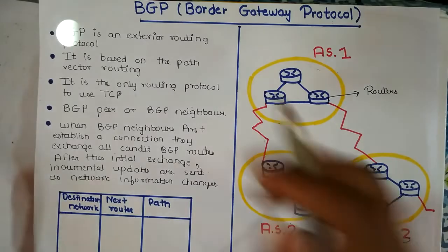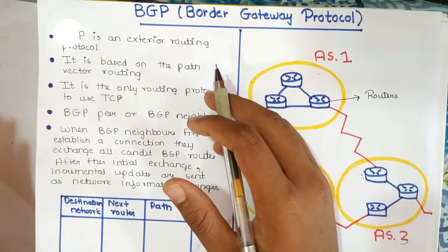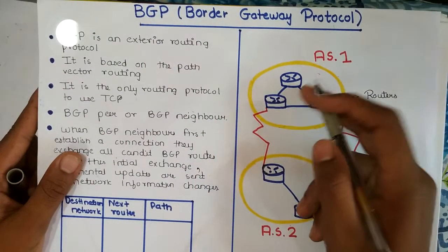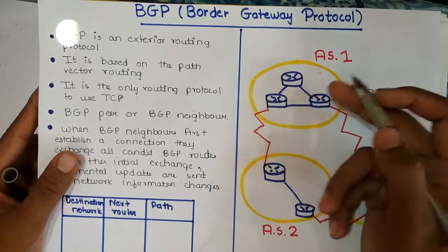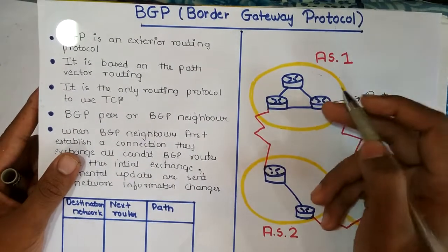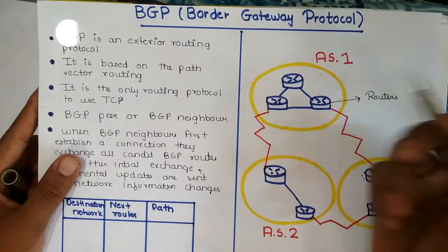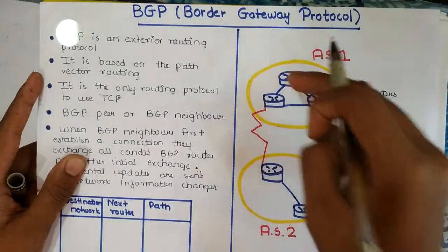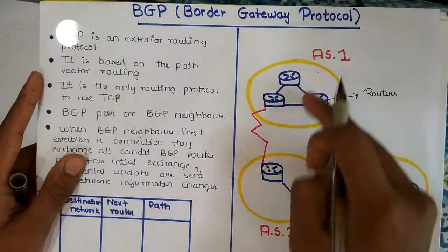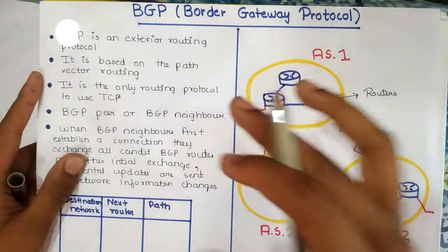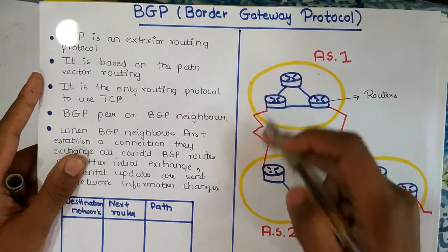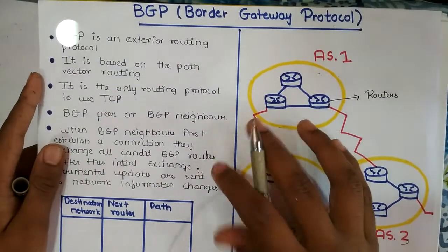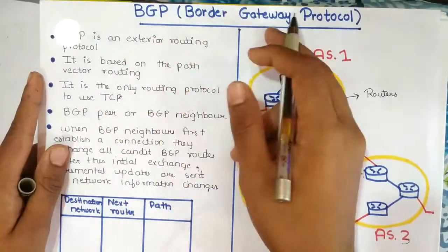Unlike other internal routing protocols that focus mainly on routing carried out in a single autonomous system, a single autonomous system may contain different routers controlled by a single administrator. But in BGP, they contain different autonomous systems which are connected to each other. Thus, BGP mainly focuses on routing between these autonomous systems. The internet mainly works because of BGP.